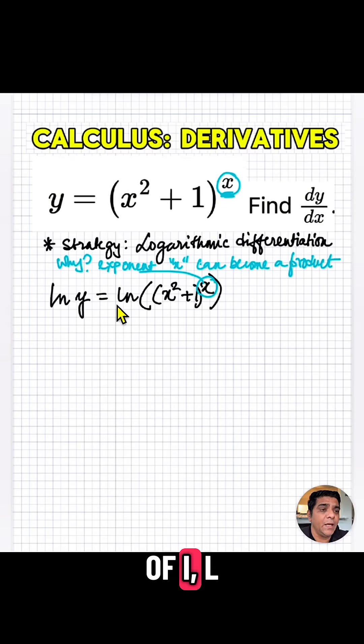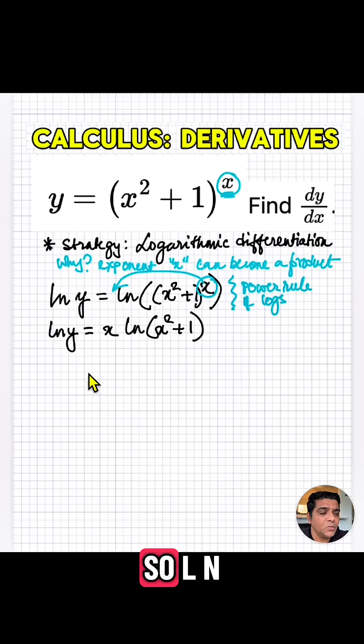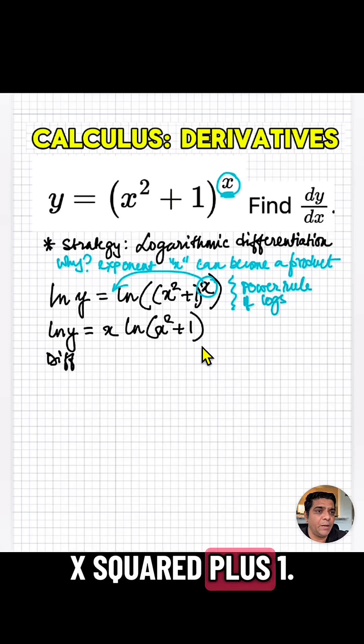So let's take ln on both sides. Then ln of y equals ln of x squared plus 1. This exponent comes to the front, as we said, power rule of log. So ln of y is x ln x squared plus 1.